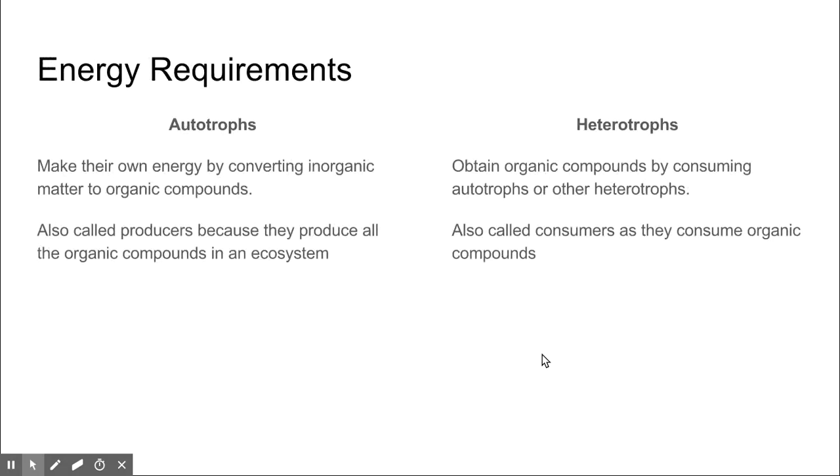Autotrophs are compared to heterotrophs based on their energy requirements. Autotrophs make their own energy by converting inorganic matter to organic compounds. They're also called producers because they produce all the organic compounds in any ecosystem. In comparison, heterotrophs obtain organic compounds by consuming autotrophs or other heterotrophs, and are called consumers.